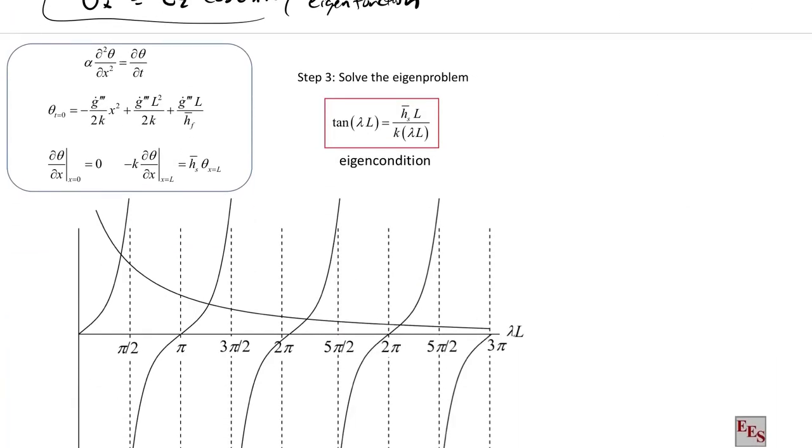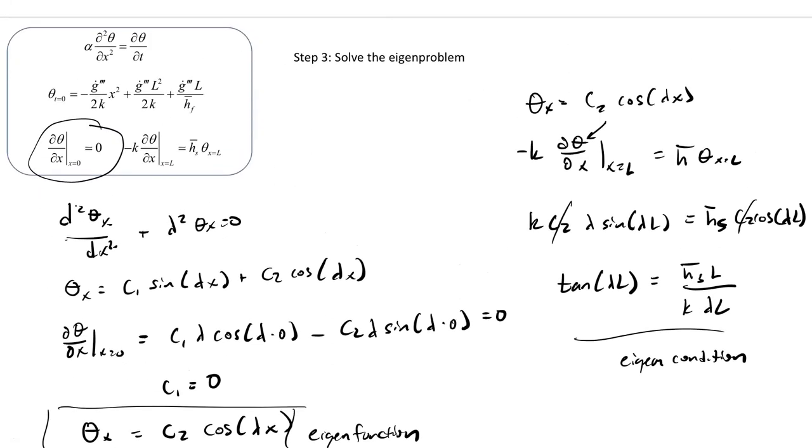So if we pick the negative, then we have, then the solution to that ODE is sinh and cosh or exponentials. Those are not periodic, like sine and cosine are. And so you can't get eigenvalues out of that. But our point is to get to a solution that has an eigencondition that gives us the lambdas that we can solve.